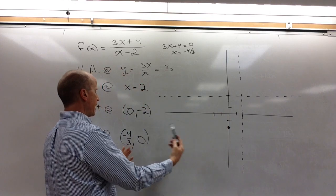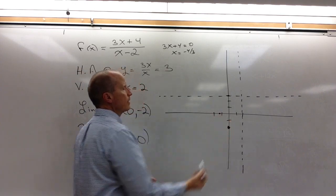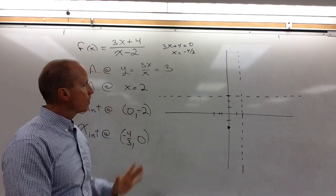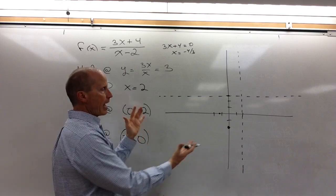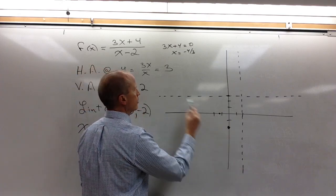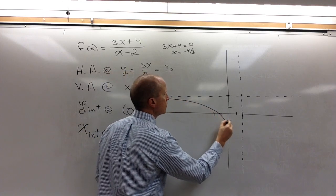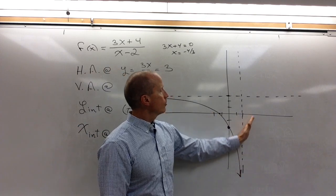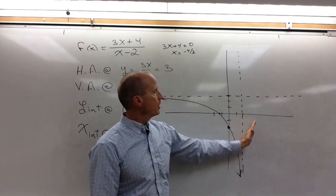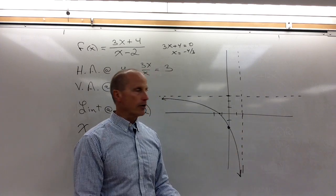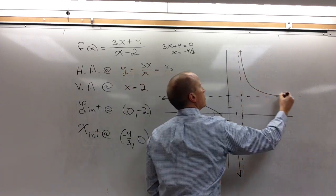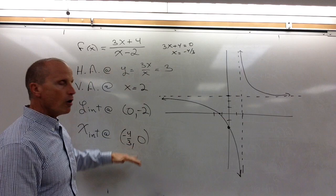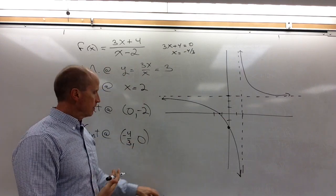Once we know all this information — which we knew just by looking at the function — we really have no choice how we graph this. I have to approach those asymptotes, and I have to cross the axes at my intercepts. Over here the graph looks like this, and over here I couldn't graph it below because that would force it to cross the x-axis where I know there's no x-intercept. And that's why the graph looks the way it does on your calculator.